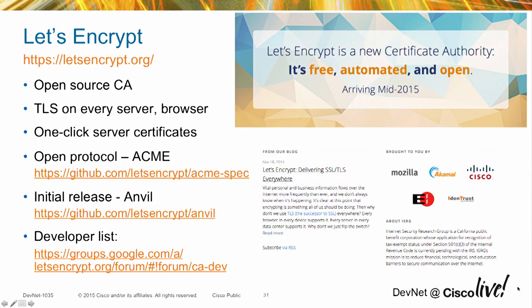One last example: Let's Encrypt. This one's pretty new and hasn't appeared in any products yet — it's not quite ready for prime time — but it's an open source certificate authority. The idea is to bolster the use of TLS and HTTPS security. Not only is the certificate authority open source, but it provides freely available certificates server-side. When you stand up your web service, it makes it very easy and free for you to get a legitimate certificate, so you don't go the route of not securing your service or using a self-signed certificate. There's an open protocol called ACME that it uses. The initial release is out, and there's a developer list where you can work with that community.